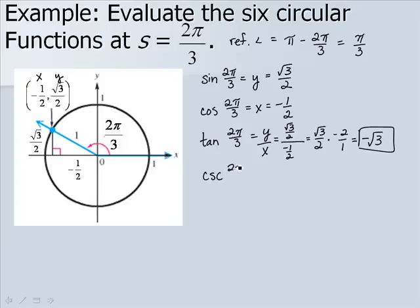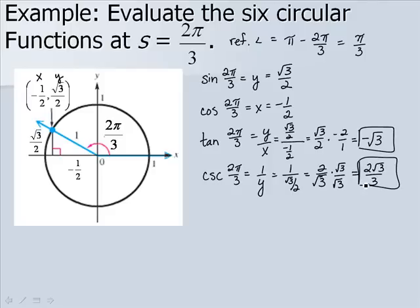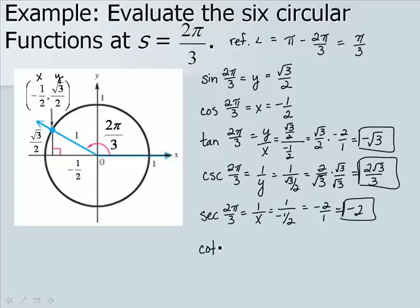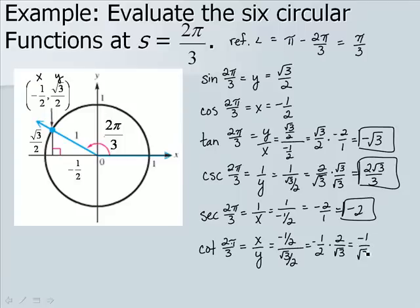Cosecant of 2π/3 is 1 over y = 1/(√3/2) = 2/√3. Rationalizing by multiplying by √3/√3 gives 2√3/3. Secant is 1 over x = 1/(−1/2) = −2. Cotangent is x over y = (−1/2) ÷ (√3/2) = (−1/2) × (2/√3) = −1/√3. Rationalizing gives −√3/3.